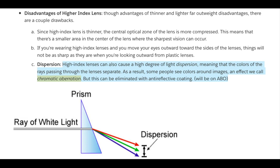High-index lenses can also cause a high degree of light dispersion, meaning the colors of the rays passing through the lenses separate. As a result, some people see colors around images — an effect we call chromatic aberration. This can be eliminated with anti-reflective coating. This will be on the ABO exam: dispersion is a high degree of light separation causing colors around images, which is chromatic aberration. High-index lenses have some of it, but it can be corrected with anti-reflective coating.